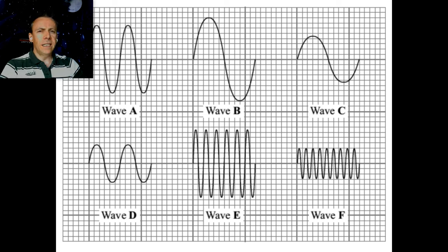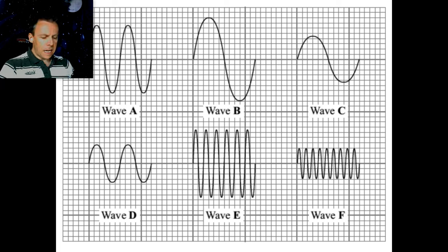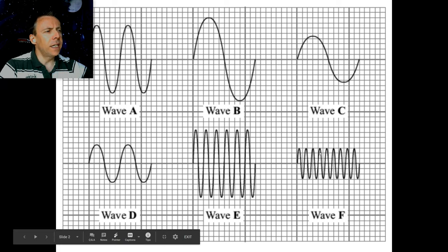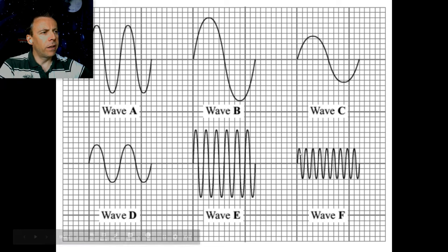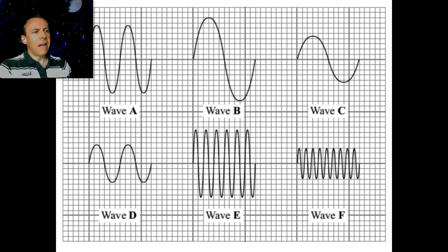Which of these will be the quietest sound? The answer is that wave F is the quietest sound. The reason isn't anything to do with the number of waves — it's the amplitude that we just talked about. Wave F has the smallest amplitude, and the amplitude of a wave determines its volume. So wave F has the quietest sound as well as the highest frequency.